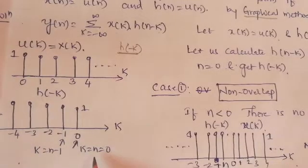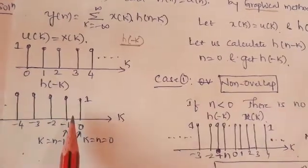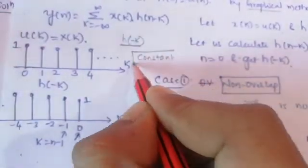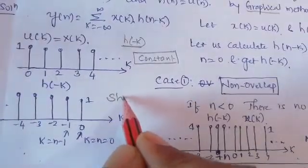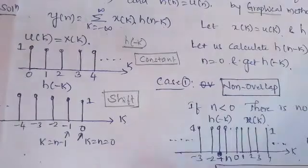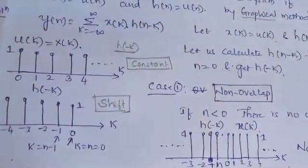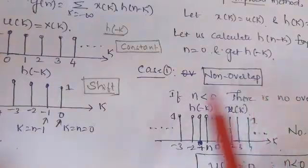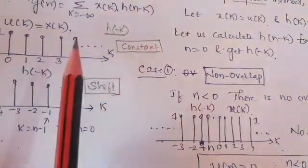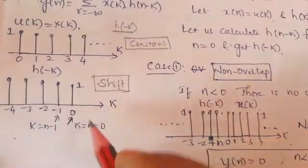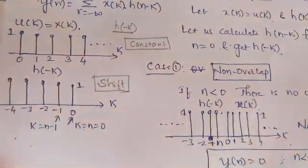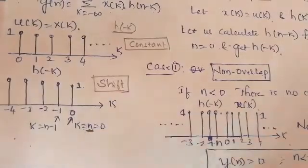So we sketch H(-k) for k ≤ 0. The first signal X(k) is kept constant, and the second signal H(-k) is shifted. We observe two cases: non-overlap and overlap. The reference point indicates the starting point; k = n = 0, and n-1, n-2, n-3, n-4 so on.